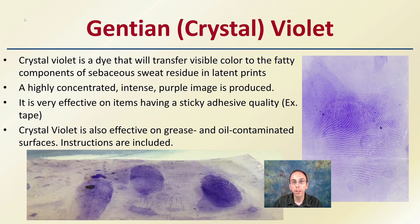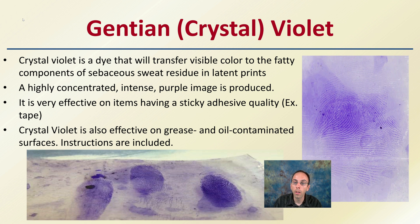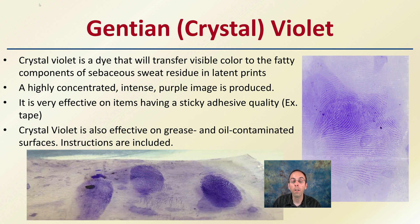Gentian violet, more commonly known as crystal violet, is a dye that transfers visible color to the fatty components of the sebaceous sweat residue in latent prints. It's highly concentrated, and intense purple images are produced. It's very effective on items having a sticky adhesive quality — for example, prints on tape. Crystal violet is also effective on grease and oil-contaminated surfaces. Instructions are included to follow those protocols to get the best visible result from these latent prints.